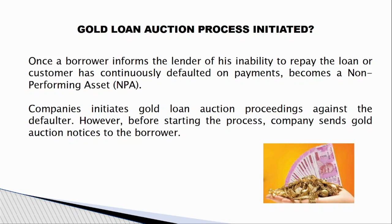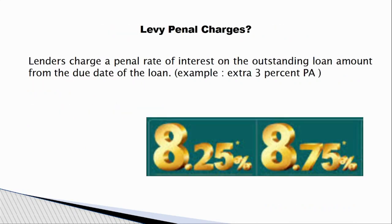The company will send a standard process notice to the customer or borrower mentioning the loan details and that the account has become NPA after three months of default. The notice gives an additional 60 days to repay the entire amount, warning that otherwise legal action or auction of the ornament will be taken.